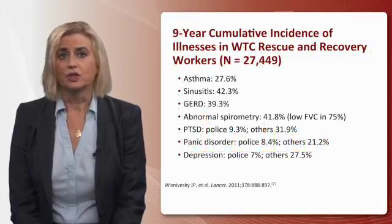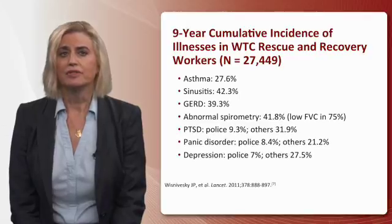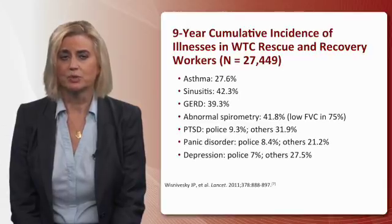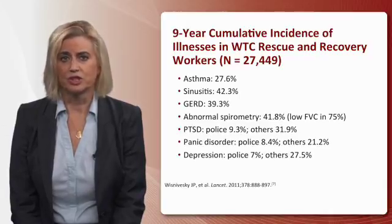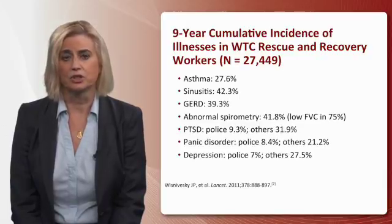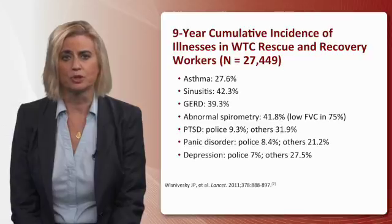Looking back after nine years, the cumulative incidence of illnesses in World Trade Center rescue and recovery workers of nearly 27,500 individuals included asthma in 27.6%, sinusitis in over 42%, GERD in almost 40%, and abnormal spirometry in 42% of responders. The predominant finding was a low forced vital capacity, seen in 75% of individuals with abnormal spirometry.